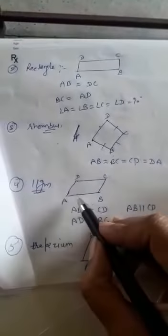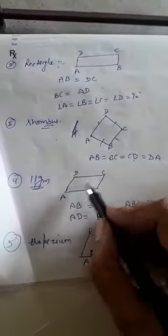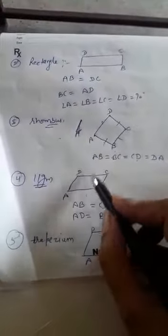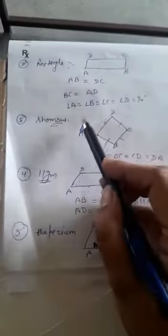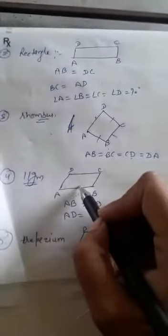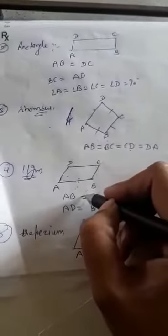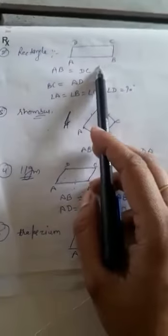Then, parallelogram. A parallelogram is a quadrilateral in which opposite sides are equal and parallel: AB = CD and AB is parallel to CD. The same holds in a rectangle where opposite sides are equal, but the difference is in a rectangle each angle is 90 degrees, while in a parallelogram each angle is not necessarily 90 degrees. So if each angle of a parallelogram becomes 90 degrees, it becomes a rectangle.